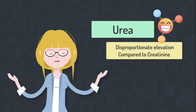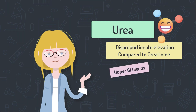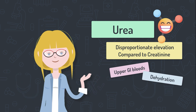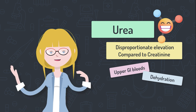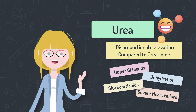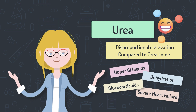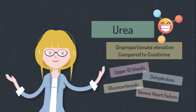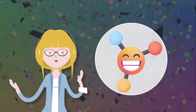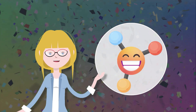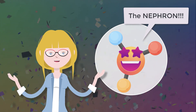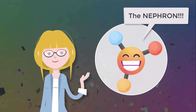We've all seen how urea becomes disproportionately elevated during upper GI bleeds or with dehydration, and you may also have noticed the rise in urea with glucocorticoids or in severe heart failure. Today we're going to deepen our understanding of how urea becomes elevated in these situations. But first we must understand the normal physiology of urea, which involves my favorite part of the body — the nephron. Let's jump right in.